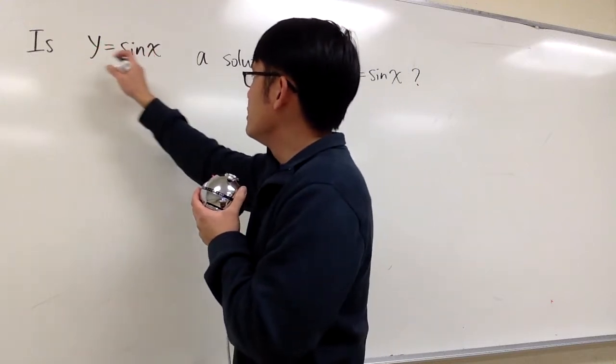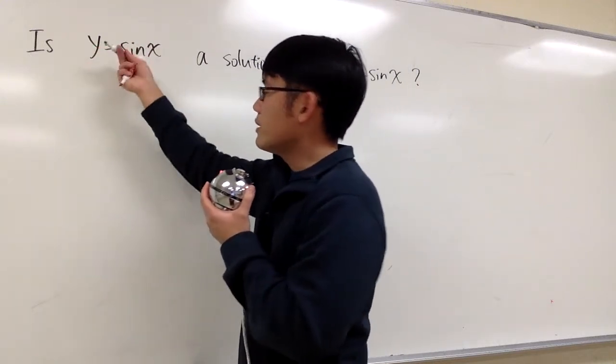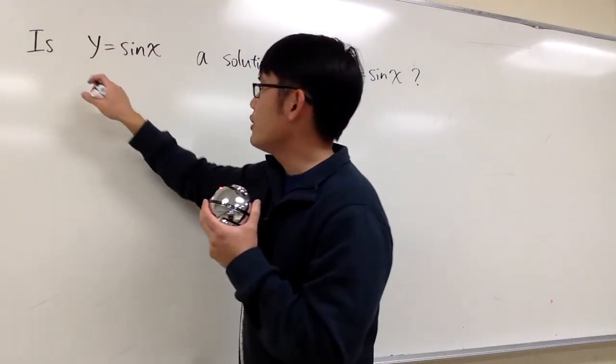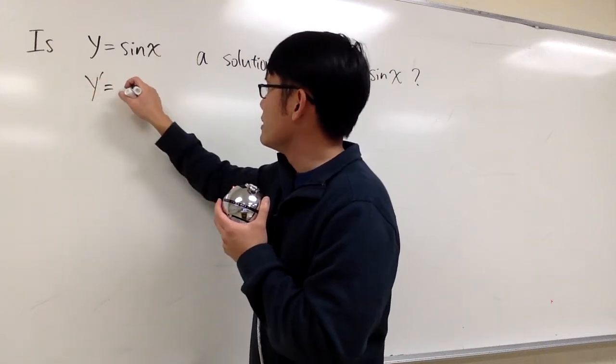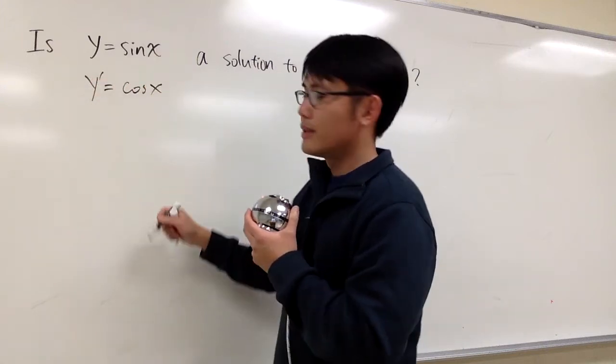So let's see. This is the first equation, right? The original equation y, and then we have to differentiate that. y prime, the derivative of sin x is cosine x. That was easy.